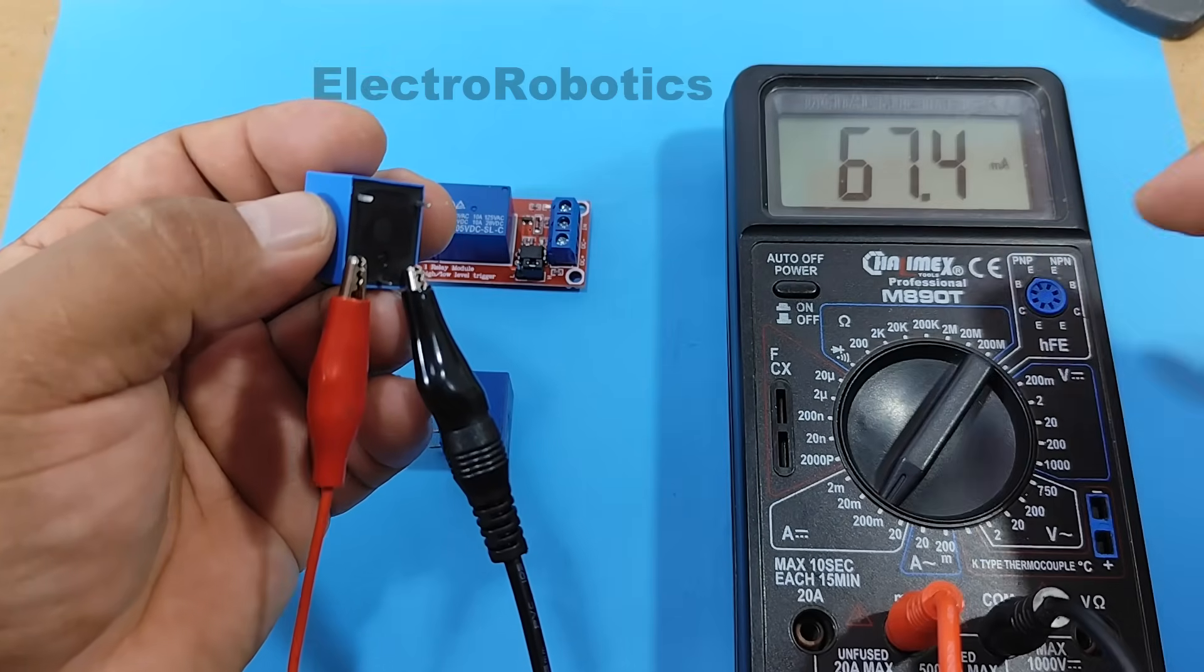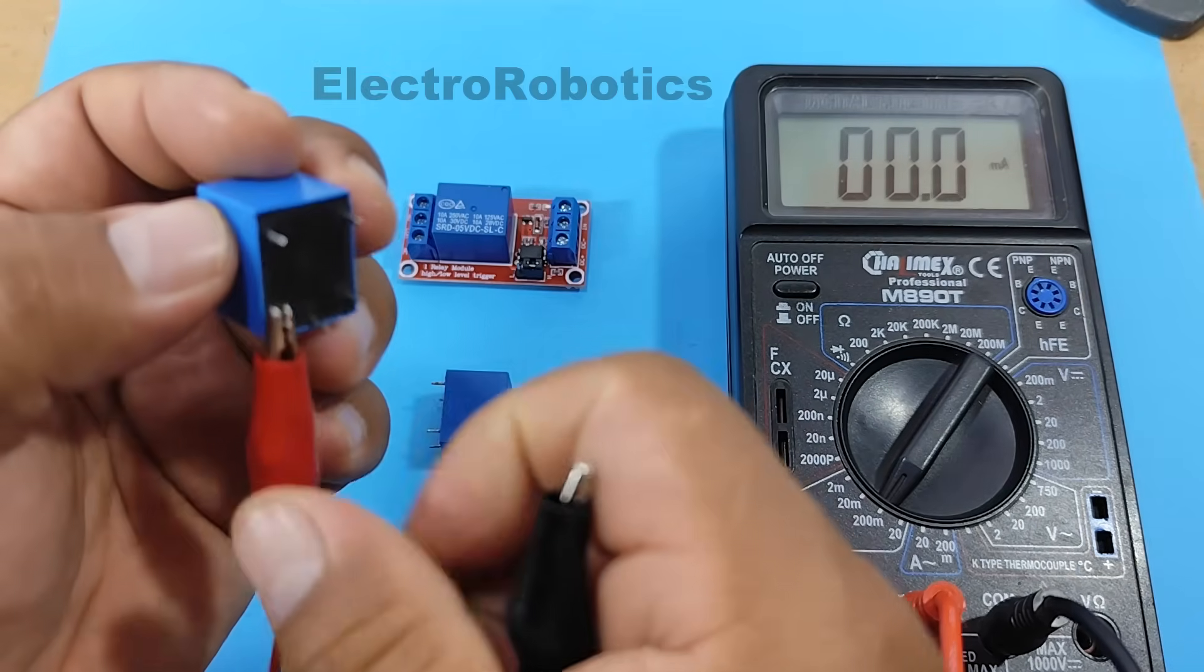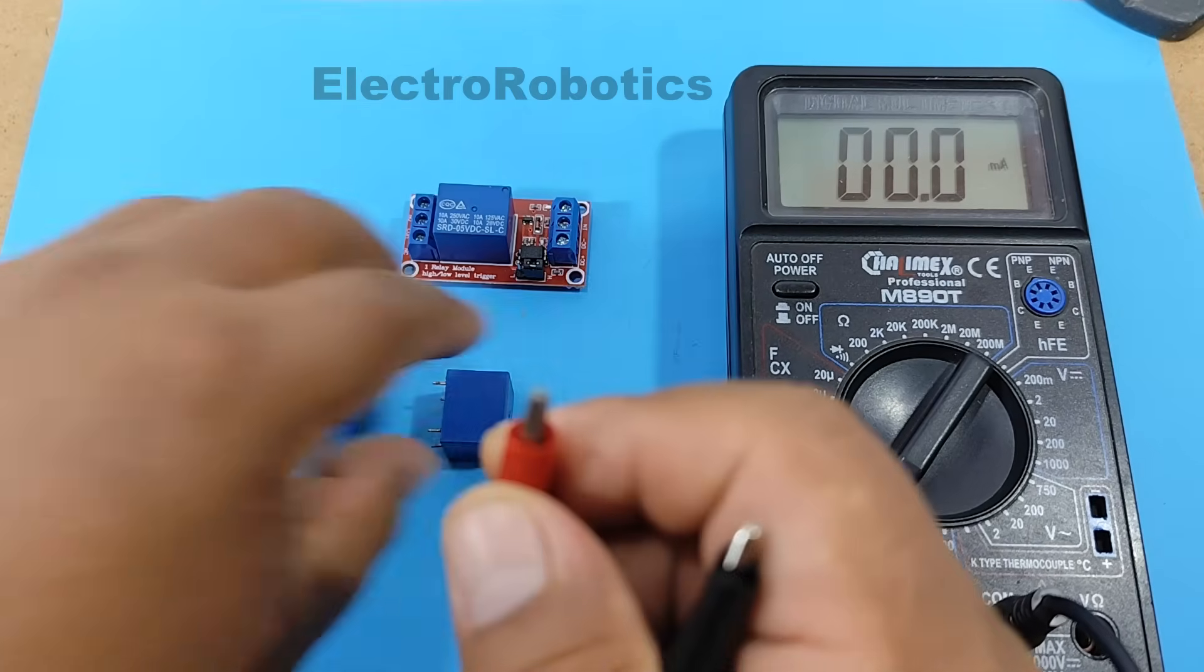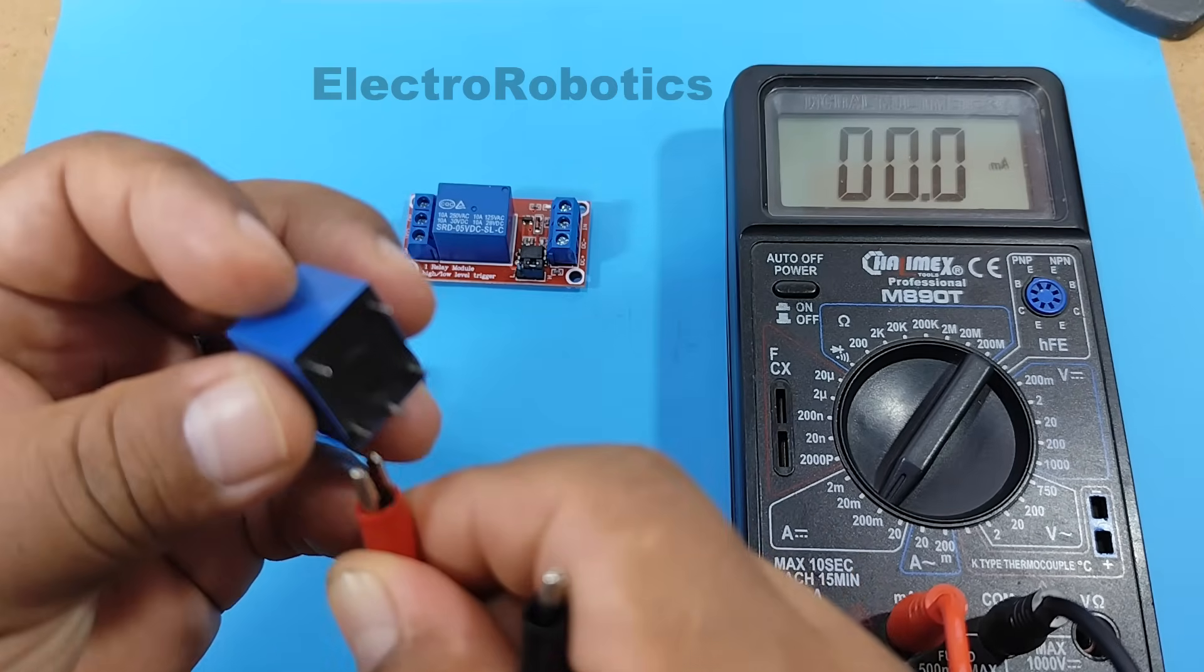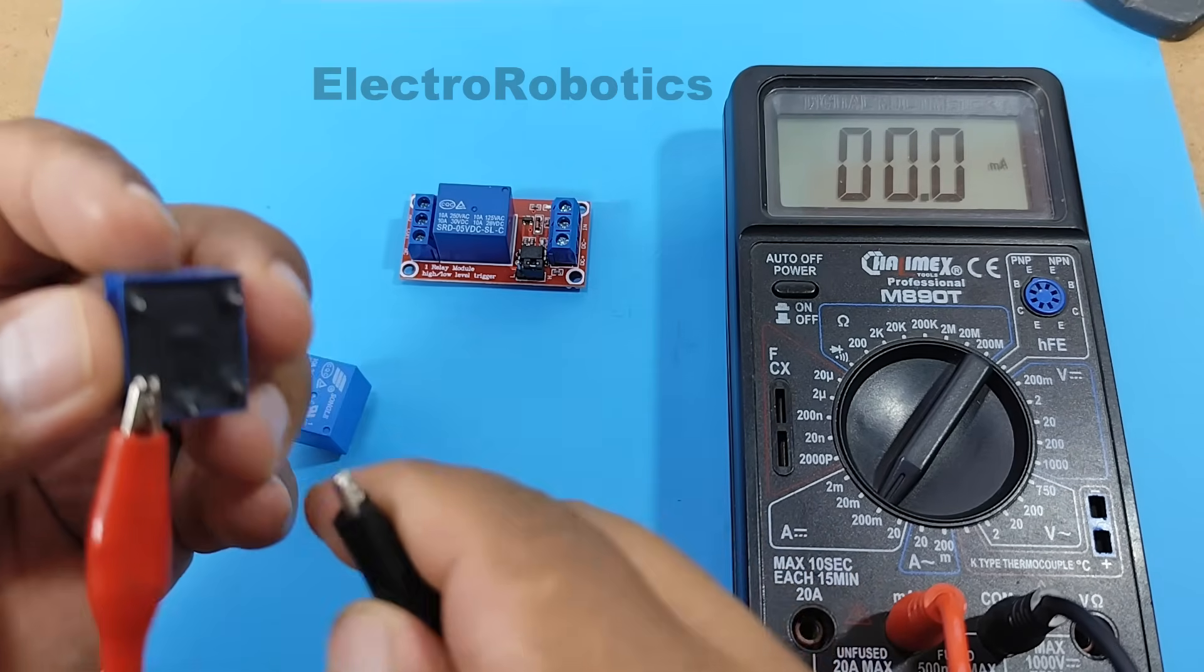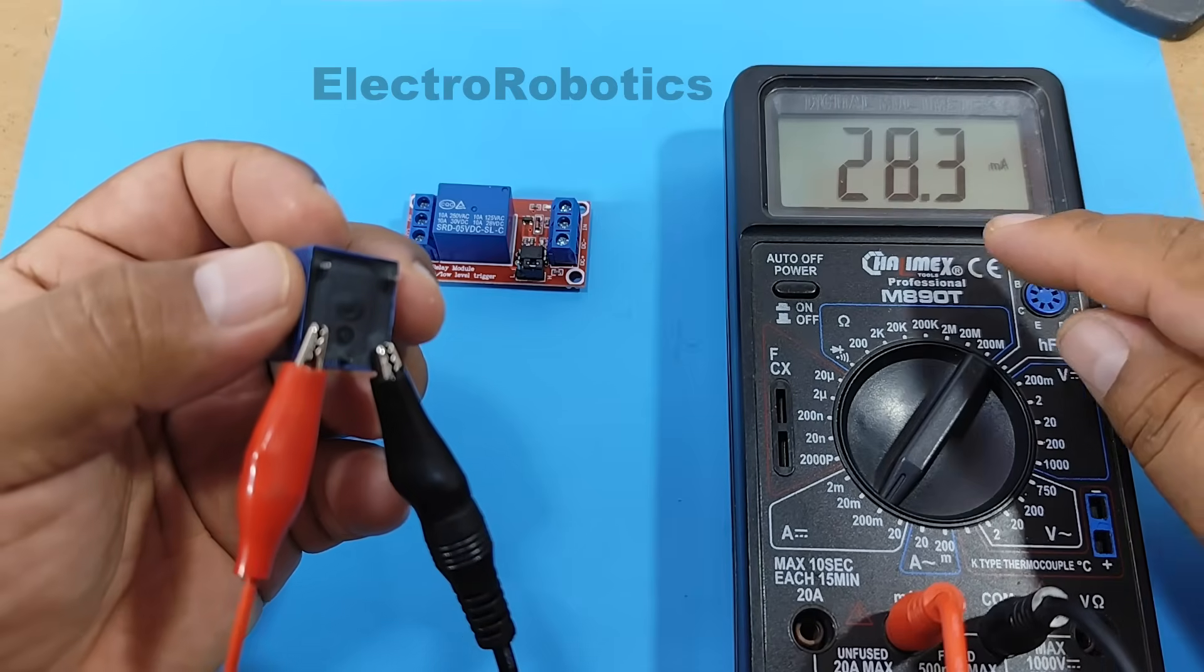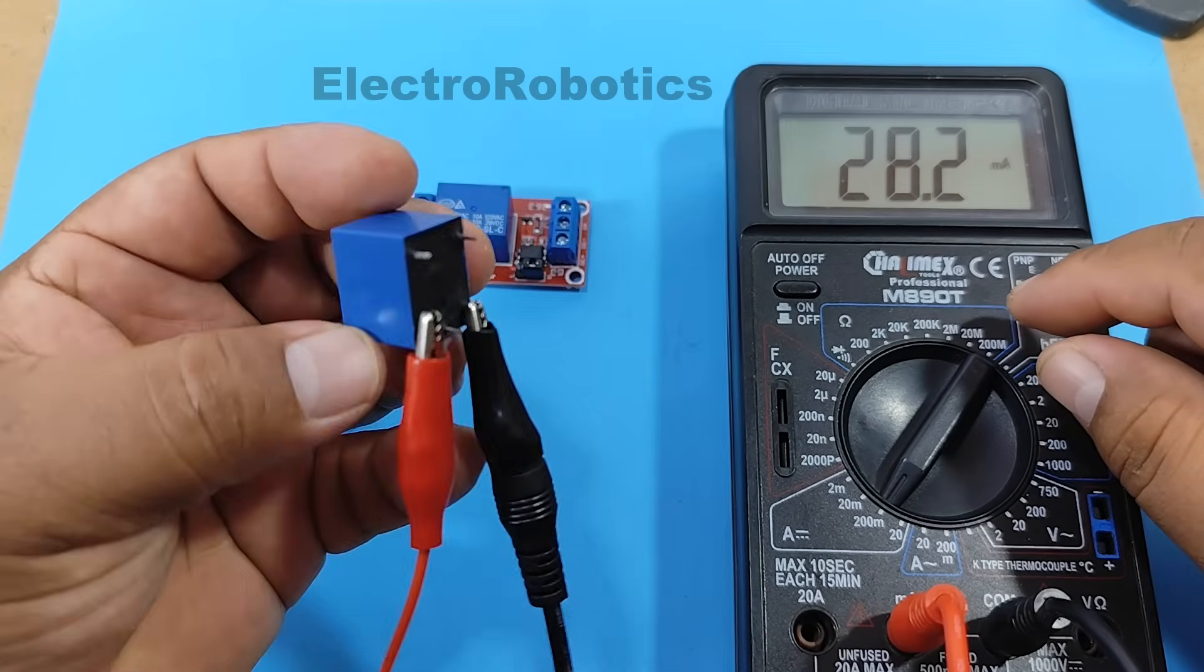Now, let's look at the 12 volt relay. As you can see, the consumption is almost 30 milliamps.